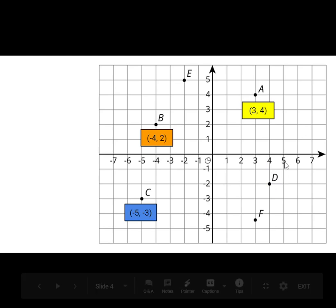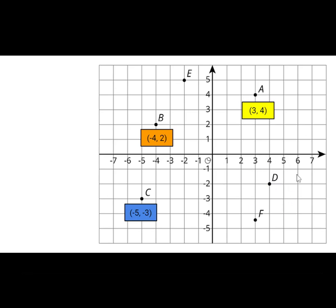For point D, pause the video and try it on your own. For D, we're going to start at the origin and move 4 units to the right — that would be positive — and 2 units down, giving us (4, −2). Now try point E. Let's check your answer. Starting at the origin, we move 2 units to the left and 5 units up. Our coordinate pair would be (−2, 5).